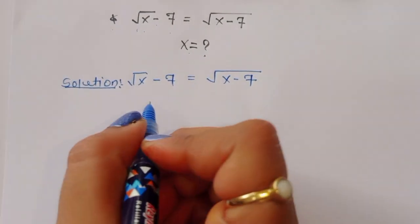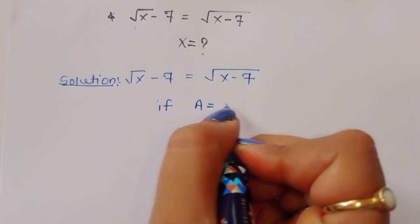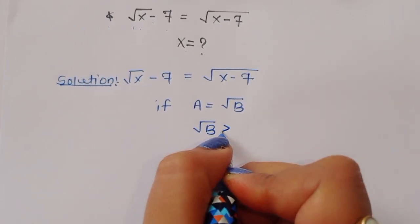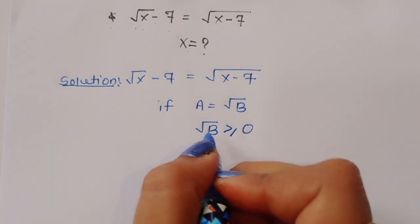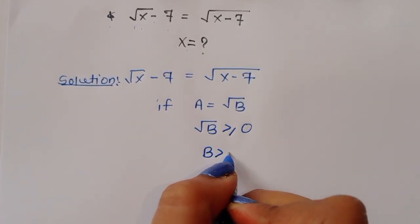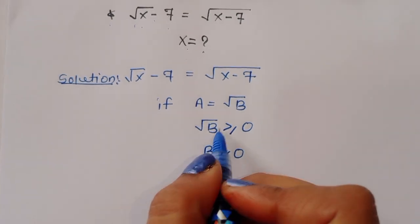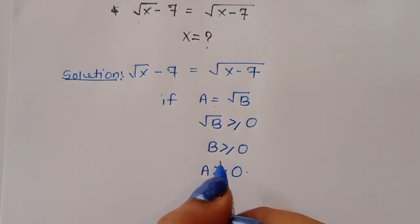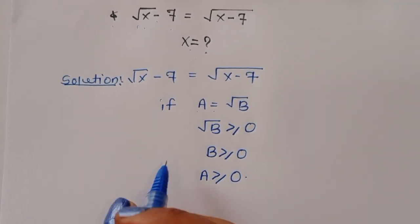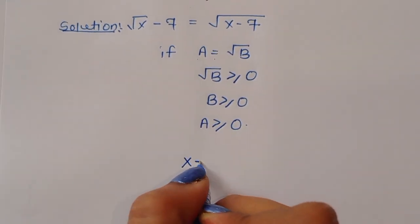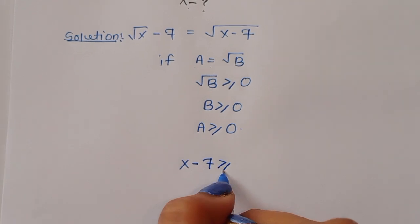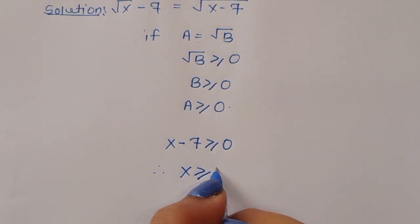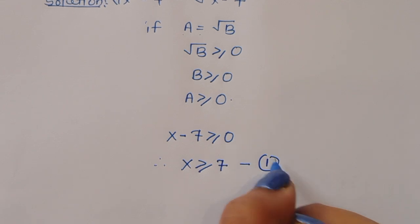We know that if a equals square root of b, then square root of b is greater than or equal to 0, so b is greater than or equal to 0, and a is also greater than or equal to 0. Using this condition, x minus 7 is greater than or equal to 0, therefore x is greater than or equal to 7. This is equation number 1.